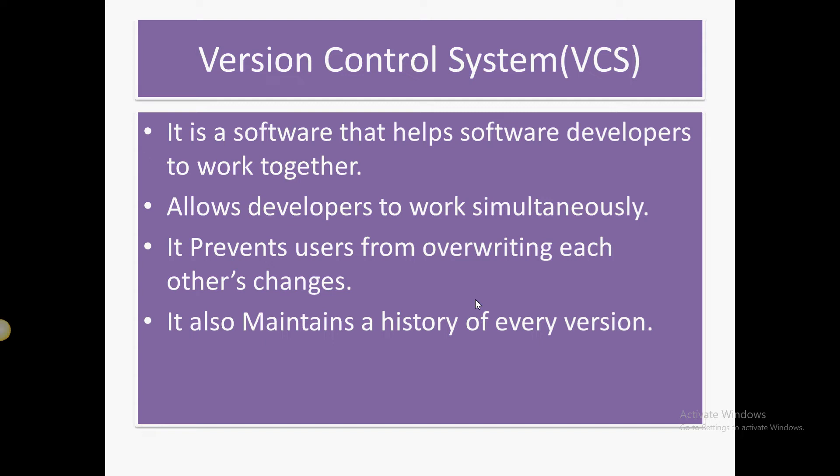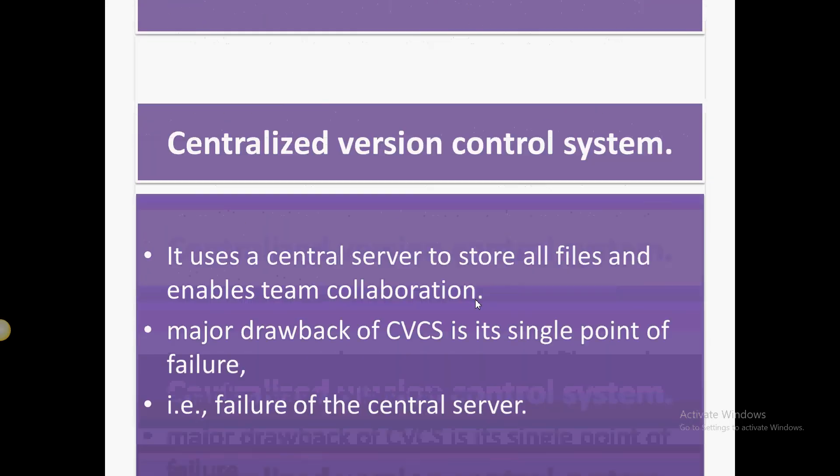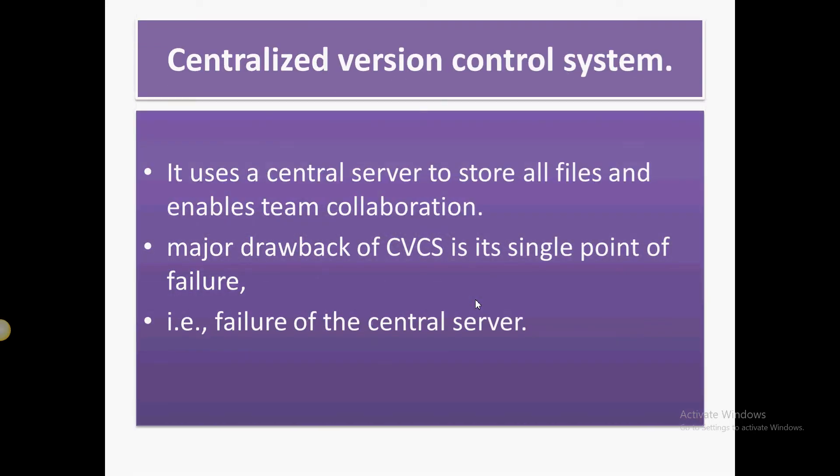If there is any problem, we can always take a prior version. If the current version is creating any issue, we can fall back to a previous version as a backup. So a version control system is a must for any project with multiple people involved, ensuring everyone works simultaneously without overwriting each other's work.